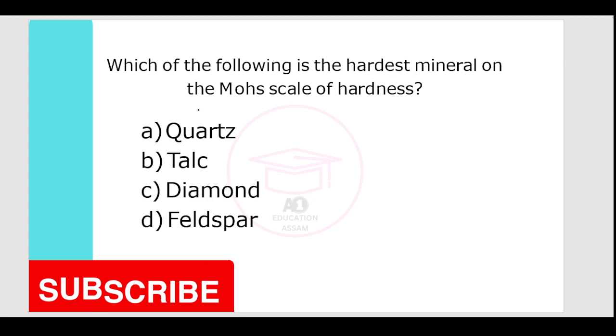Which is the hardest mineral on the Mohs scale of hardness? Options are quartz, talc, diamond, feldspar. The correct answer is diamond. Diamond is the hardest mineral, made of carbon.